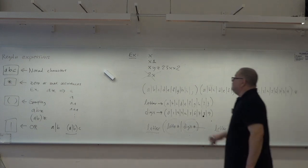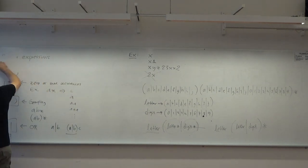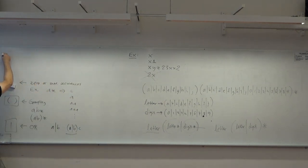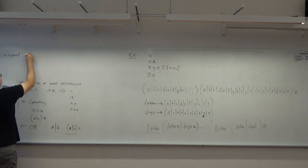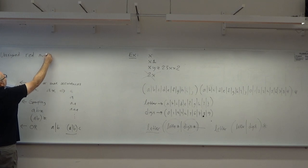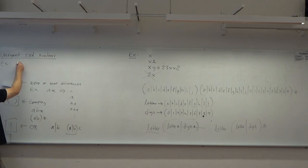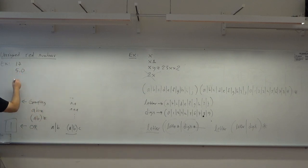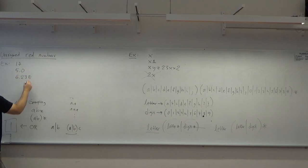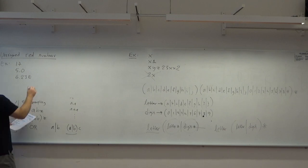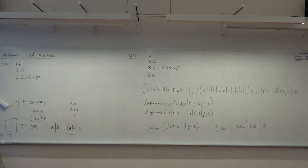Another example using just these basics: unsigned real numbers, such as 17, or numbers with decimals, or things like 6.23e-23 — scientific notation with an exponent. How do we write a regular expression for that?